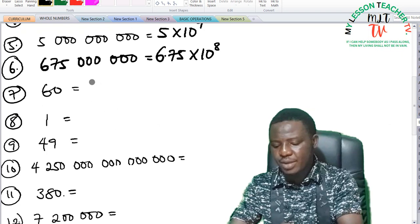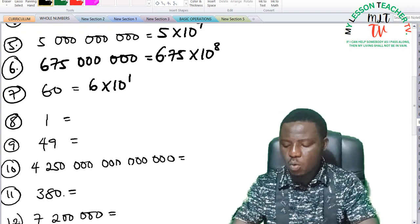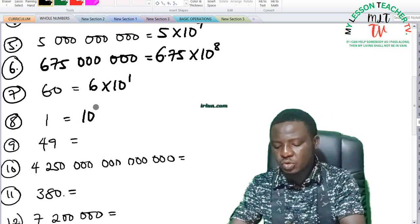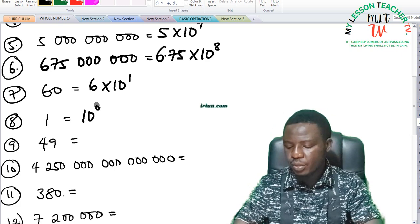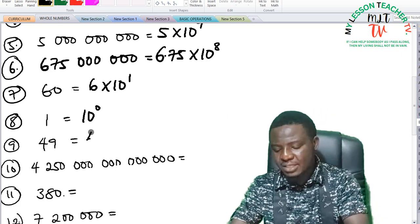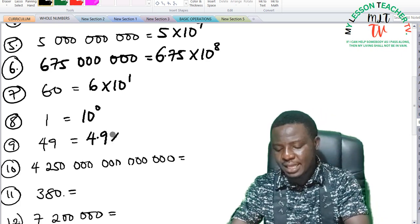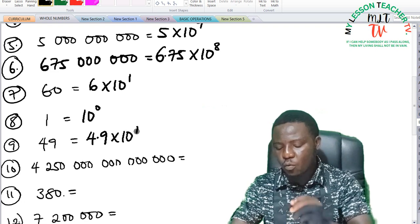Number 7, 60 can be expressed as 6 times 10 raised to the power of 1. While 1 can be expressed as 10 to the power of 0. All these in standard form. 49 can be expressed as 4.9 times 10 raised to the power of 1.